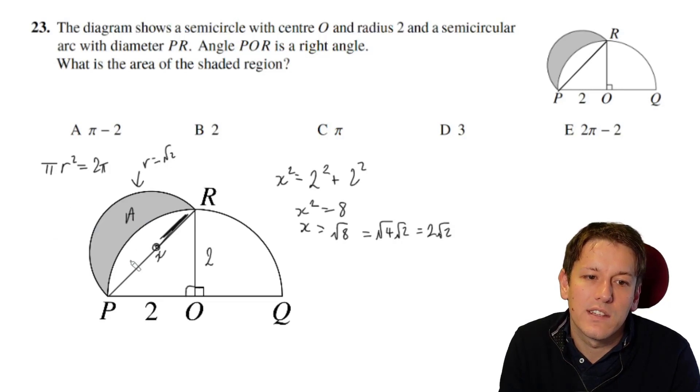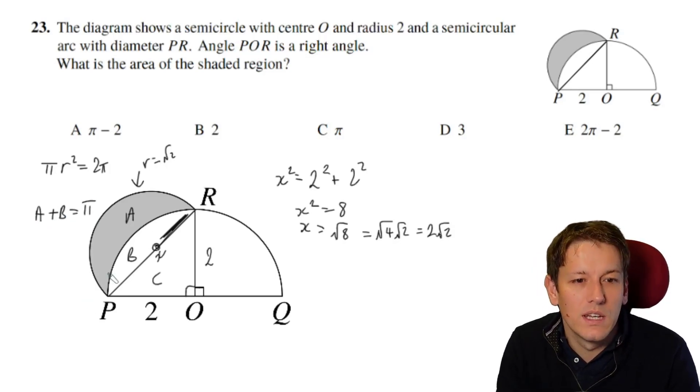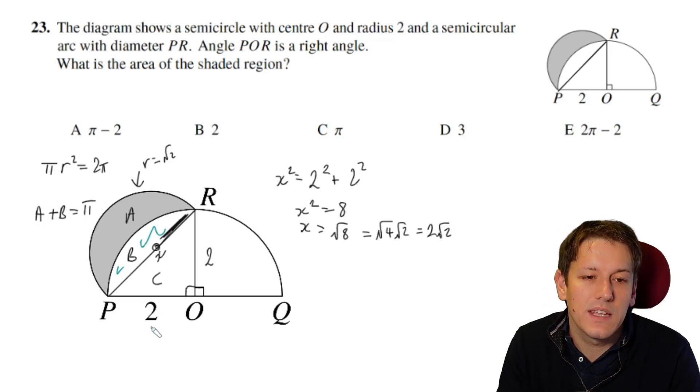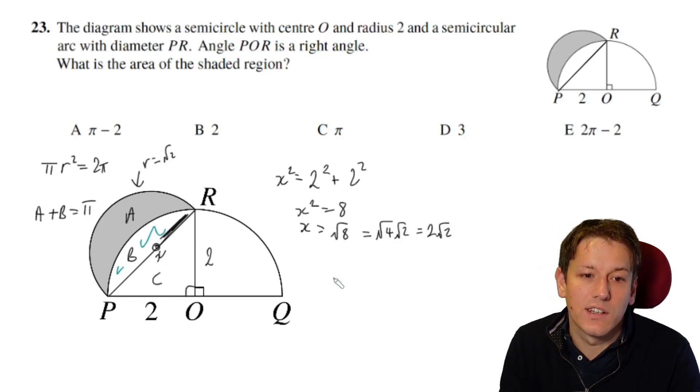And I want a half of that for the semicircle. So 2 pi over 2 gives me pi for the area of, let me just write this, let's write that as a, b and c. So the a plus b would give me pi. So actually, what I want to do is to work out the area of b, so I can sort of subtract that off.